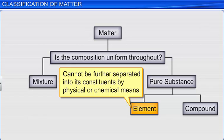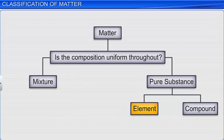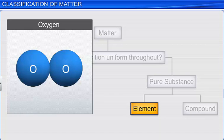An element cannot be further separated into its constituents by physical or chemical means. For example, oxygen consists of only oxygen atoms, and it cannot be further separated into its constituents, that is oxygen atoms.